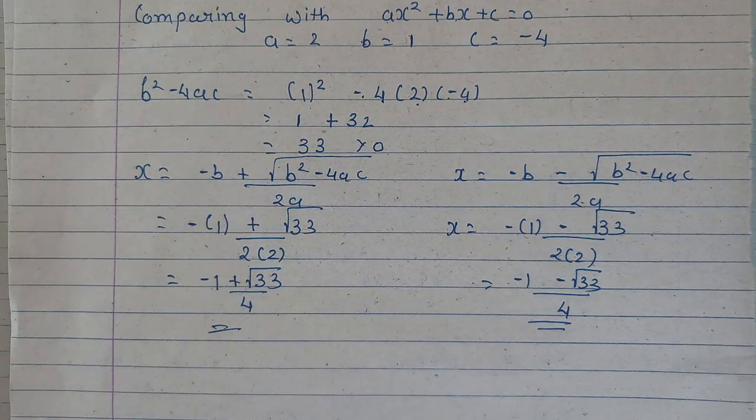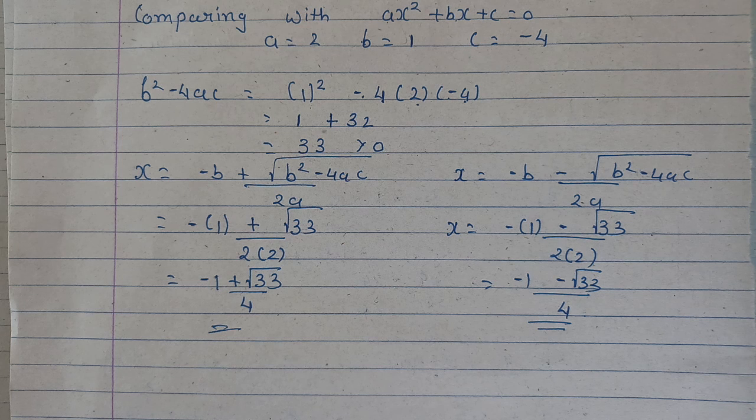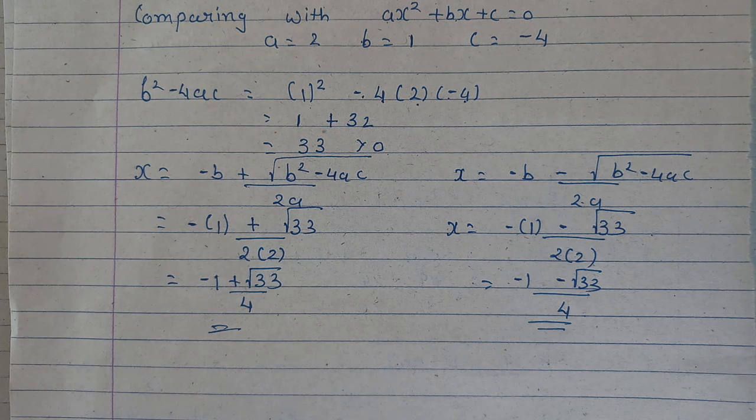So our roots will be minus 1 plus root 33 upon 4. And the second one is minus 1 minus root 33 upon 4. Clear?